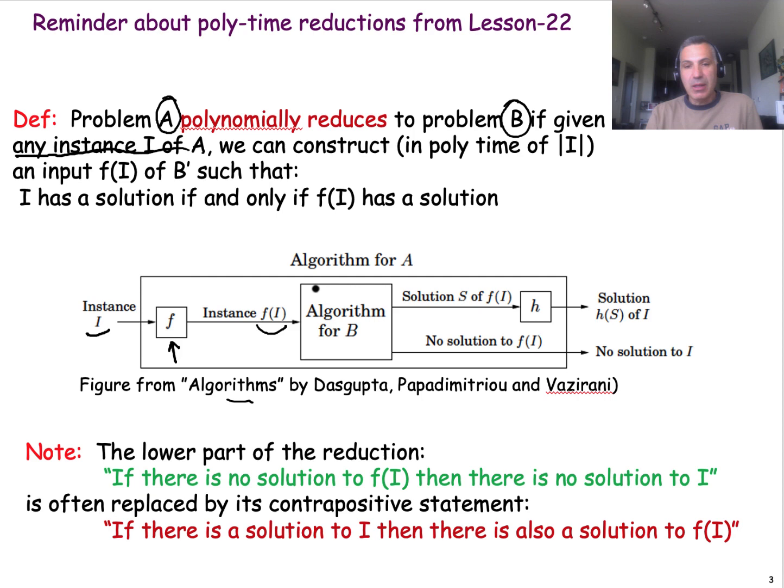Now, we use this algorithm that we have to solve problem B. We apply this algorithm on the instance F(I), which is an instance of problem B. And there are two things that can happen. One is that this instance has a solution, let's call it S. The other case, of course, is that there is no solution.